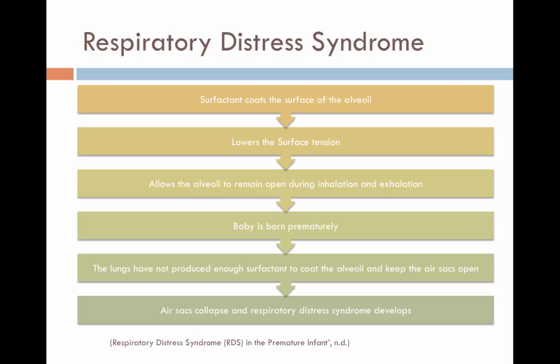Usually, production of surfactant begins about 32 weeks of pregnancy. Therefore, the more premature the newborn, the less surfactant is available and the greater the likelihood that respiratory distress syndrome will develop.